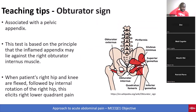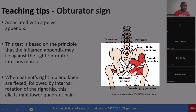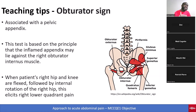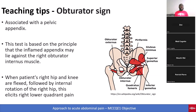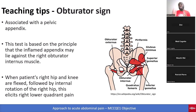The obturator sign is associated with pelvic appendix. This test is based on the principle that the inflamed appendix may lie against the right obturator internus muscle. When the patient's right hip and knee are flexed, followed by internal rotation of the right hip, this elicits right lower quadrant pain. So if a case describes McBurney's point tenderness, psoas sign, Rovsing's sign, or obturator sign, you must be able to identify each one.